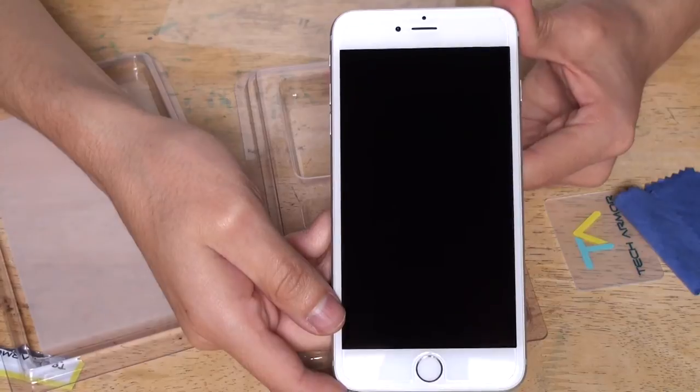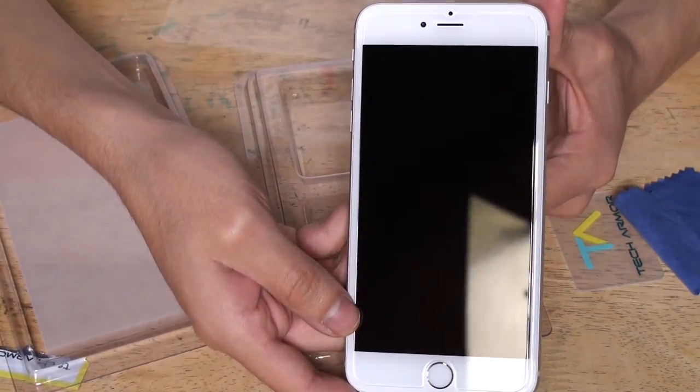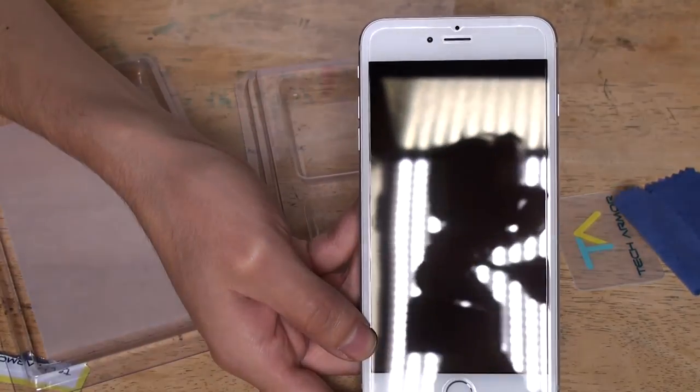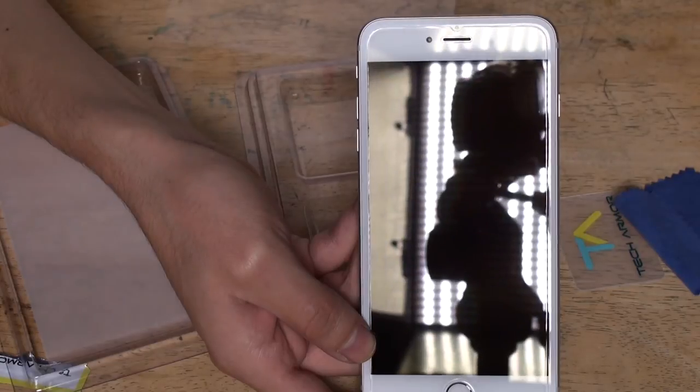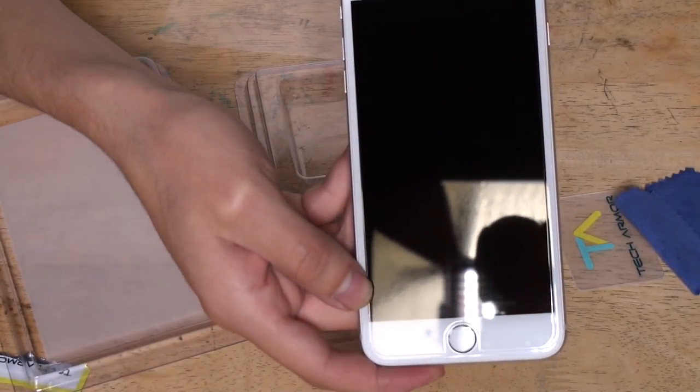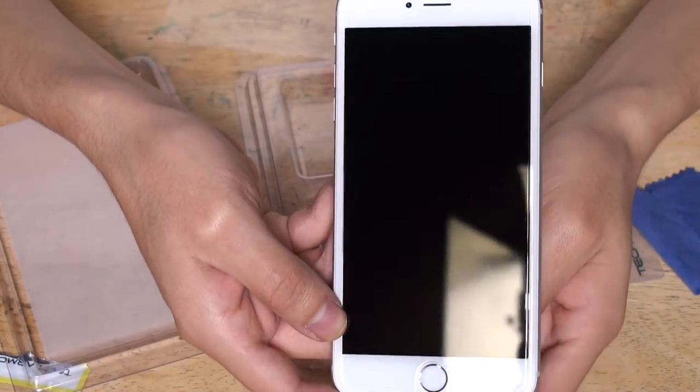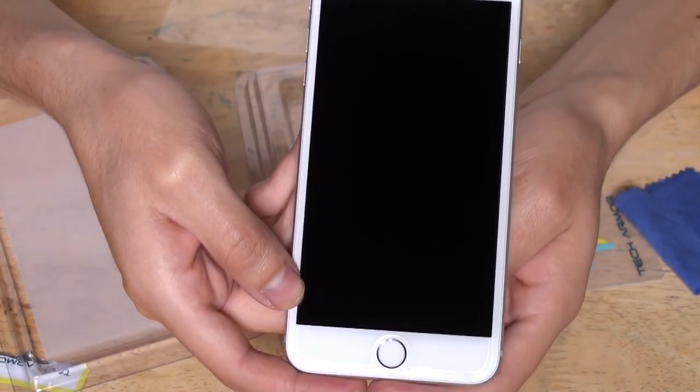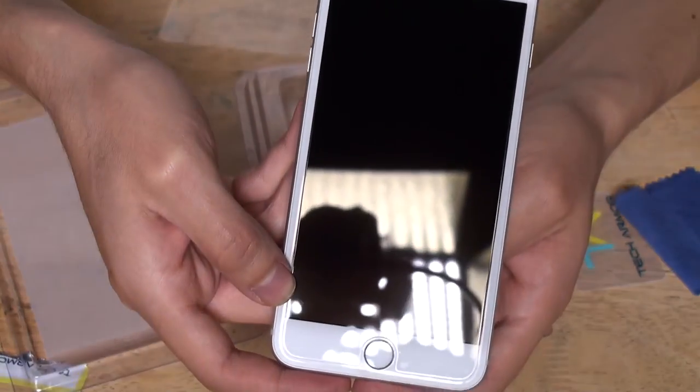You now have your screen protected by the TechArmor ultra clear ballistic glass screen protector. Just look at that. It's well protected and aligned. That's nice right there. You can see how the home button is as well also aligned. So that's what you want.